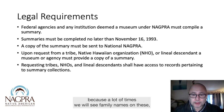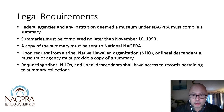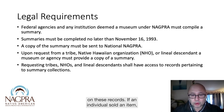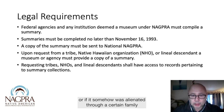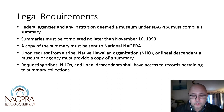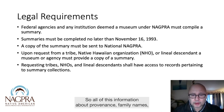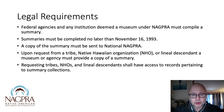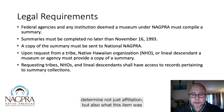A lot of times we will see family names on these records — if an individual sold an item or if it somehow was alienated through a certain family, or if it was taken from a certain town. All of this information about provenience, family names, and tribal names is really important to determine not just affiliation, but also what this item was and continues to be within tribal communities.